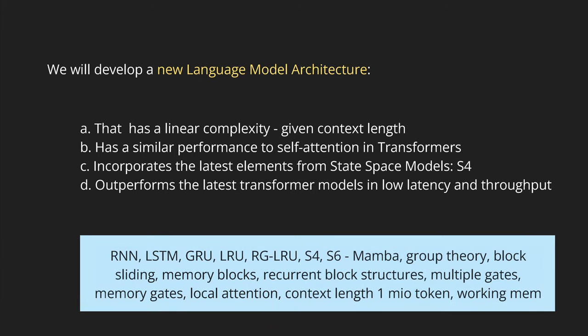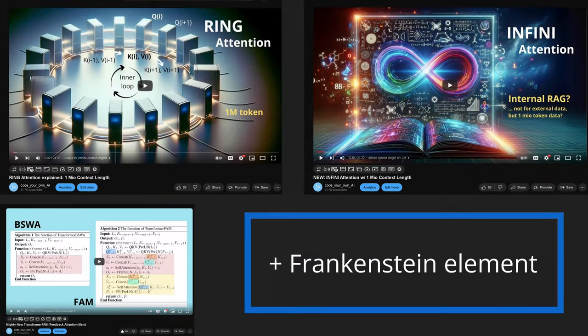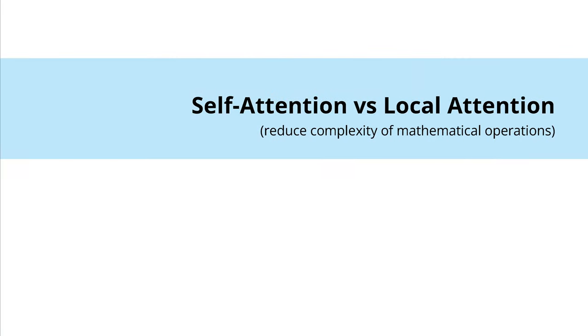We will use some different elements. We built a Frankenstein monster. We have here the ring attention that we know for 1,000,000 context length. We have infinity attention, also about 1,000,000 context length, with a new memory idea. And then we have the transformer FAM with the feedback attention mechanism here in the loop. Now we need a new element to combine all of this. Let's start at the very beginning for our green grasshoppers.